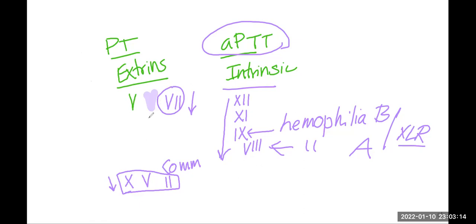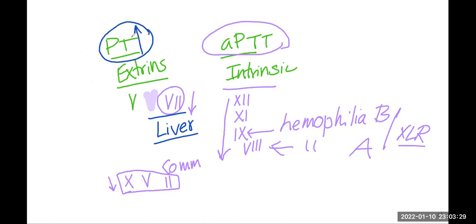Liver disease will affect PT because it impairs production of coagulation factors, particularly Factor 7. Warfarin is an anticoagulant that works through vitamin K antagonism, and vitamin K is important for the production of Factor 7, among other factors.